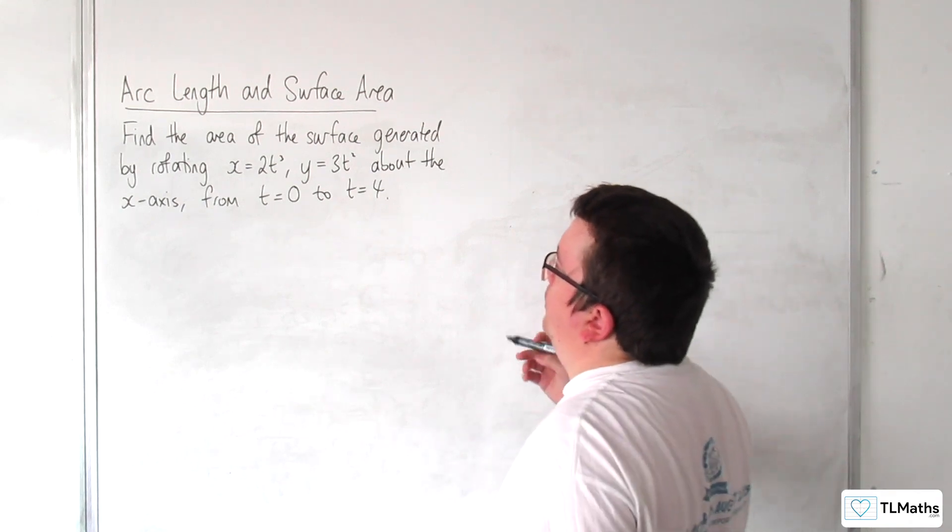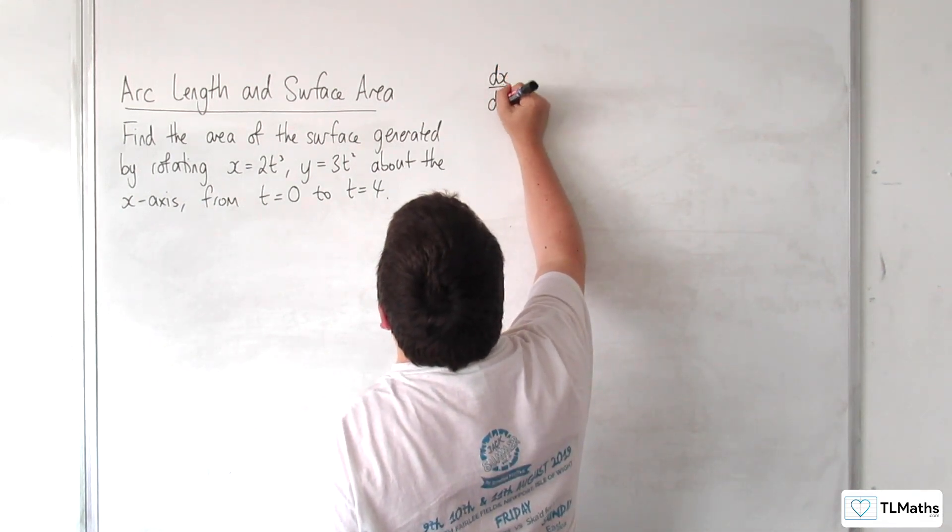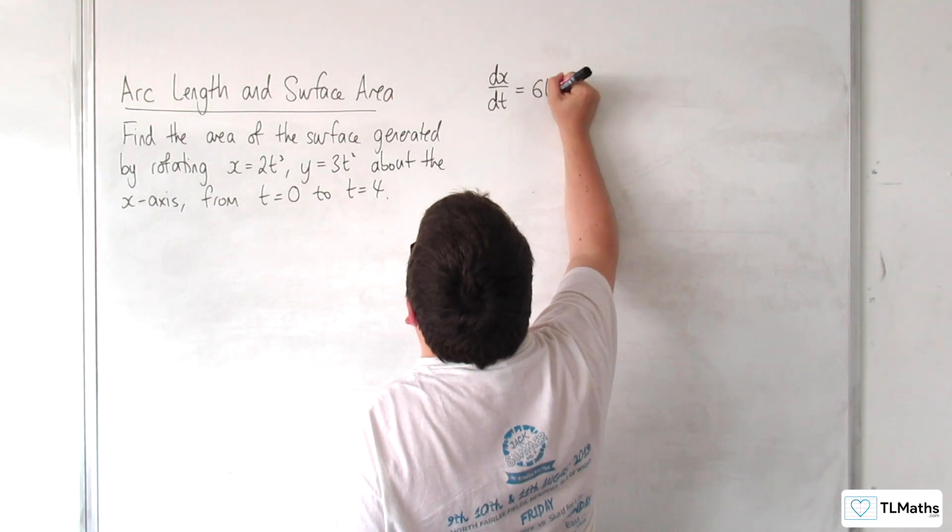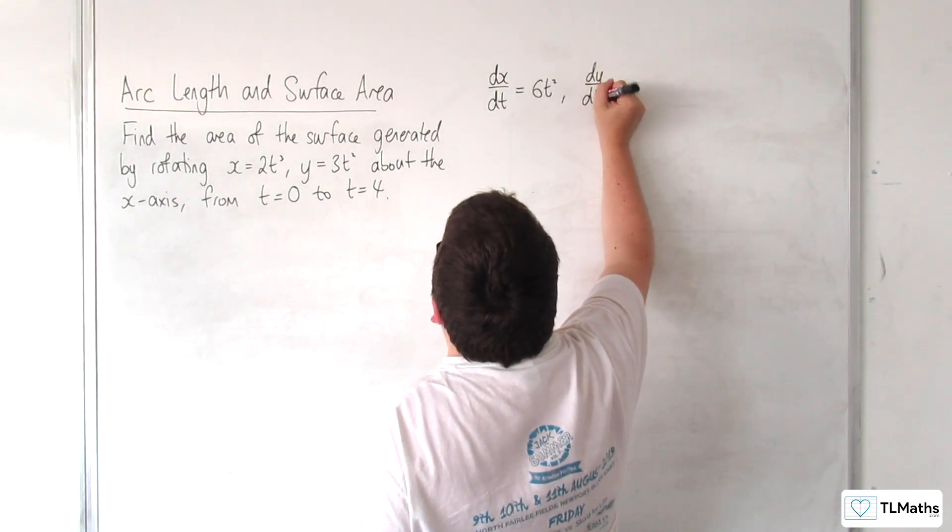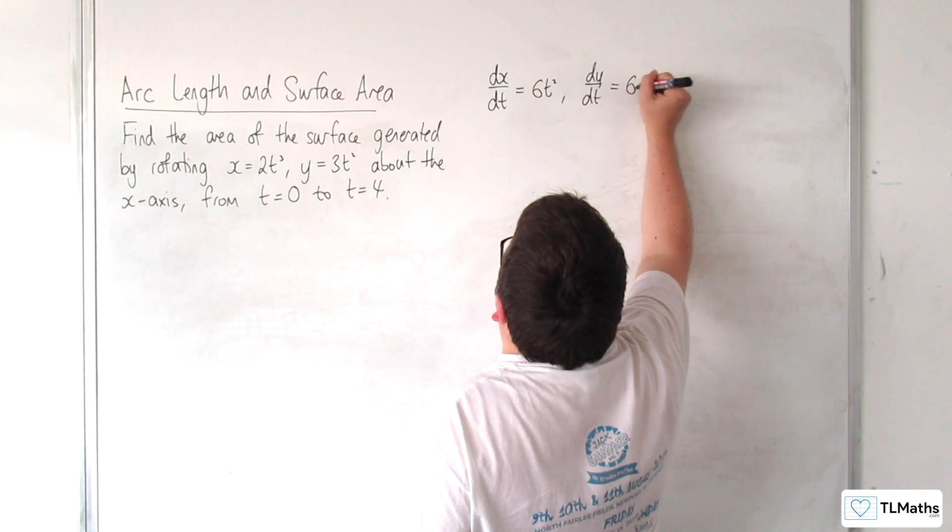Okay, so as part of the formula, I'm going to need to find dx by dt, which is going to be 6t squared, and dy by dt, which is going to be 6t.